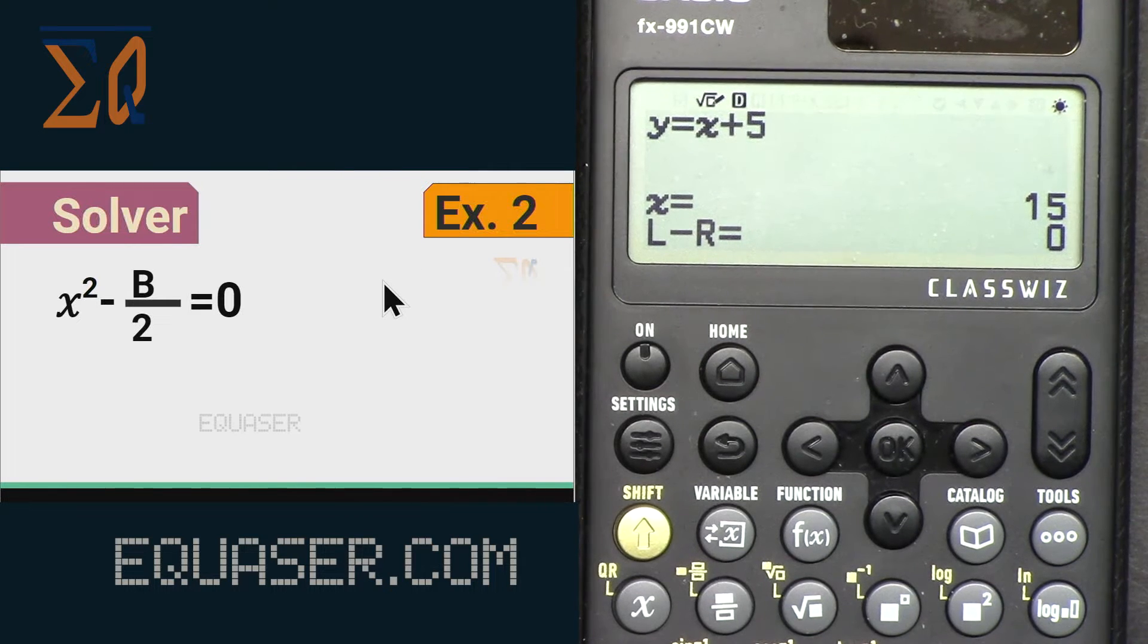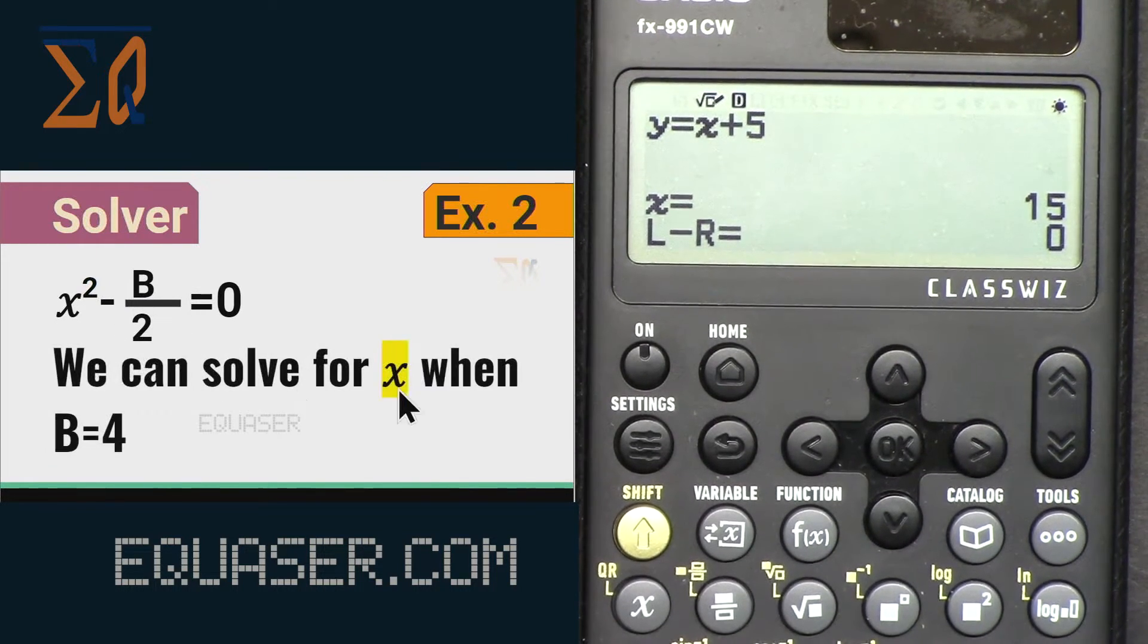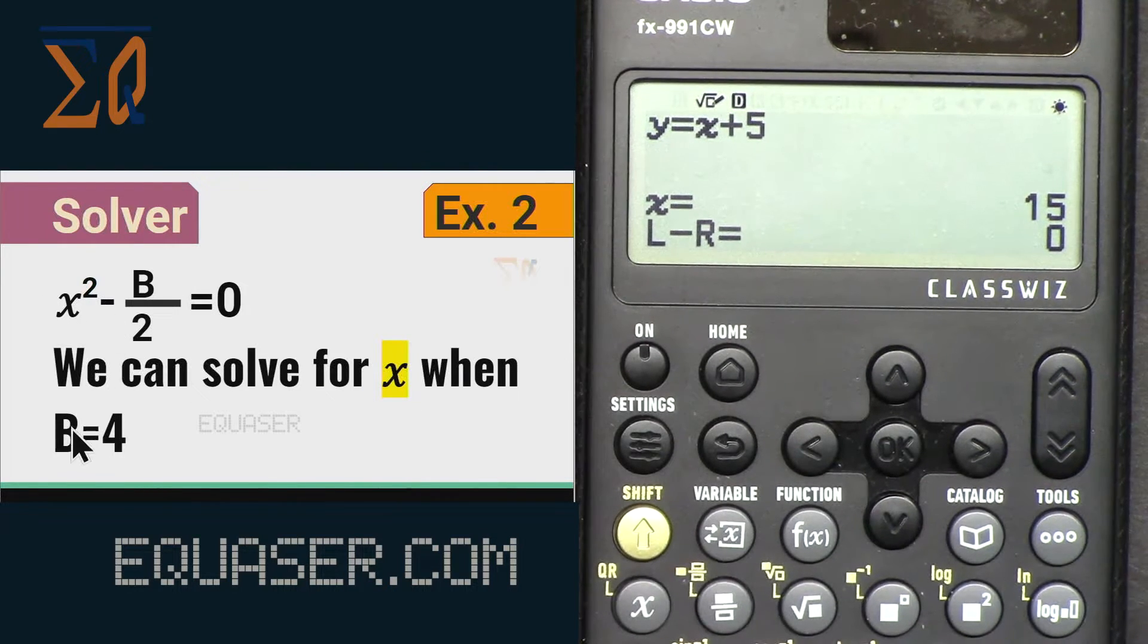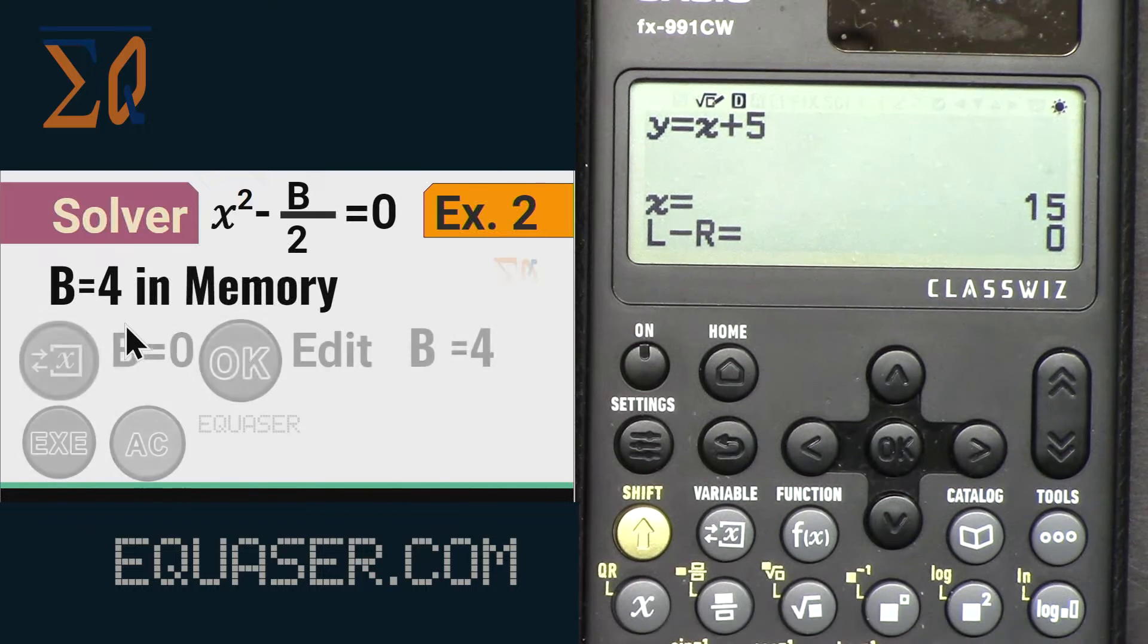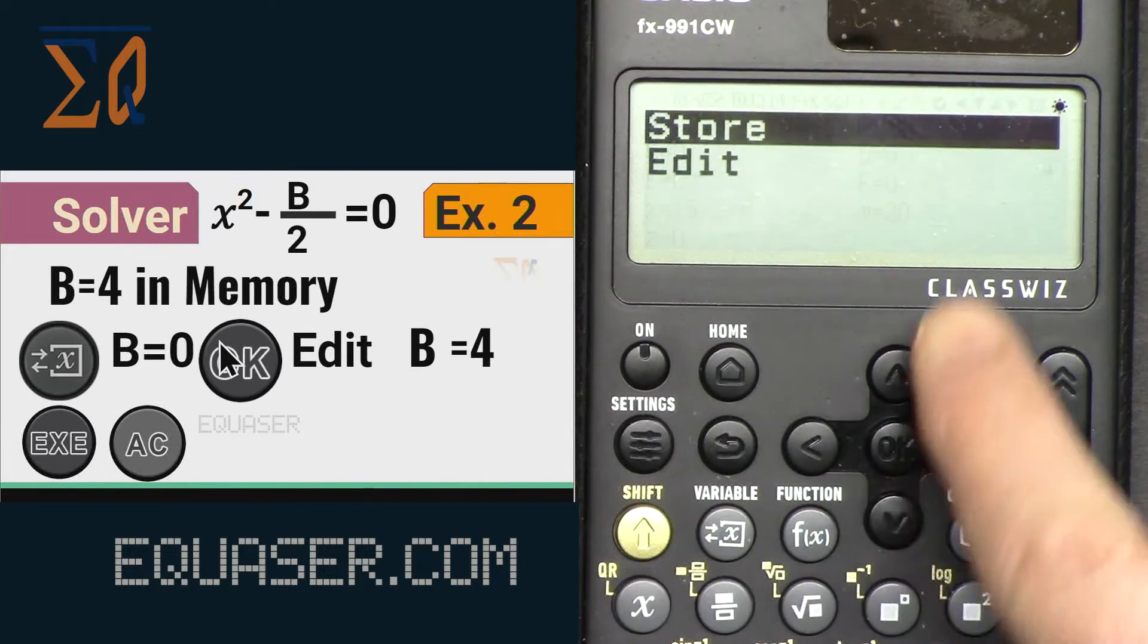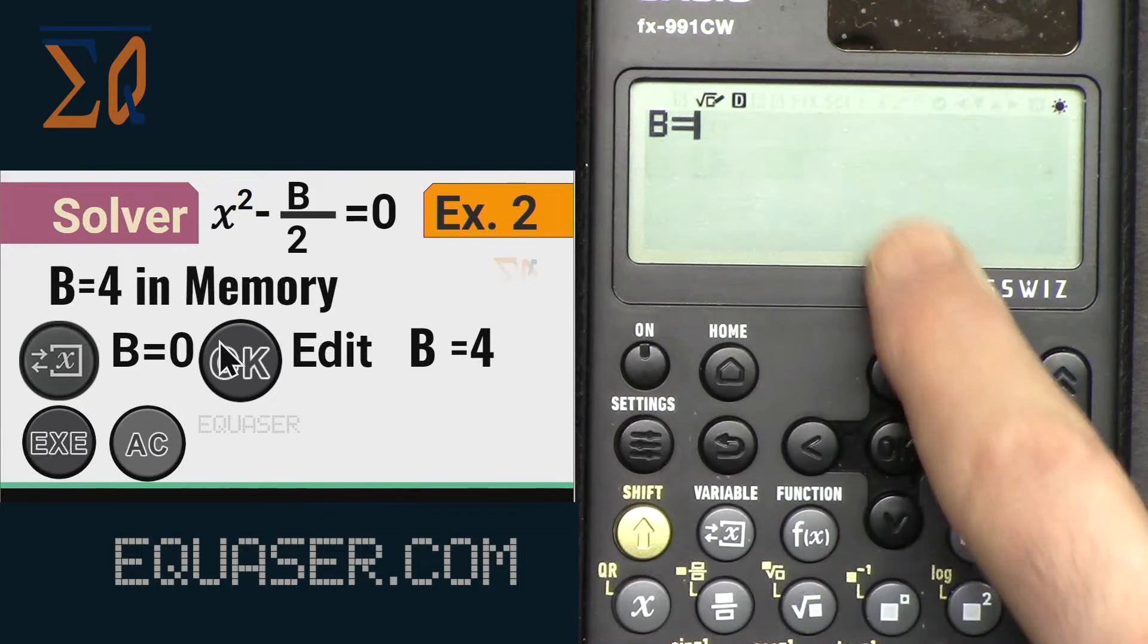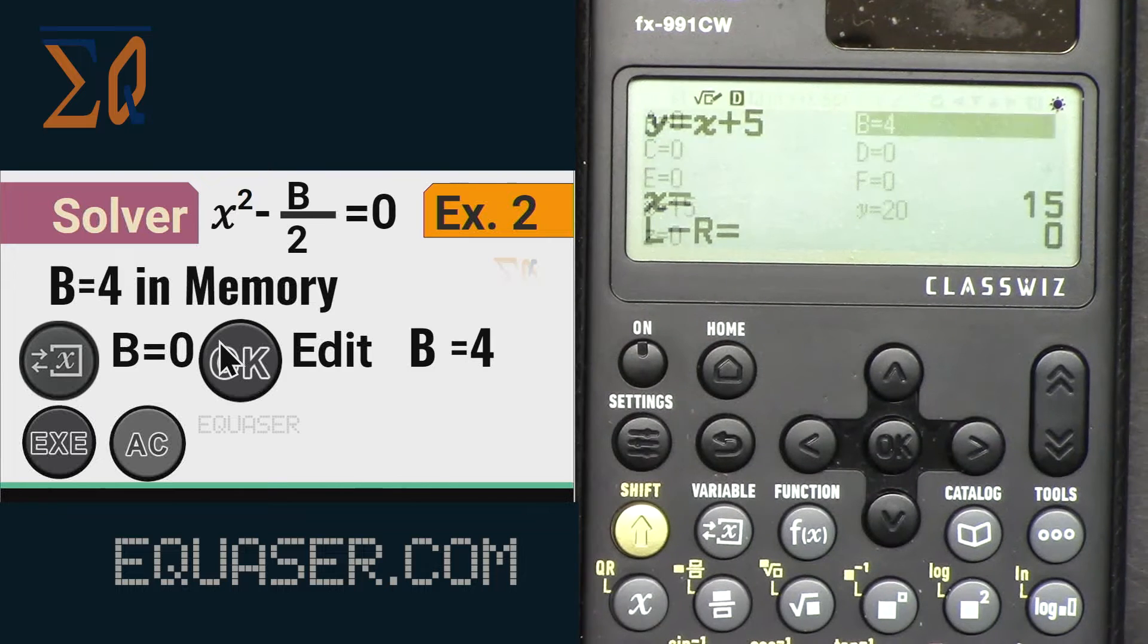Now this is example 2. X squared minus b over 2 equals 0. We want to solve for x if we know the value of b. I'm entering b, for b I'm entering value of 4. So let's put b in the memory. Press this button, go to b and then edit, and then 4 equal. So now we have it. All clear, exit.